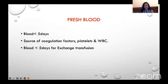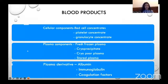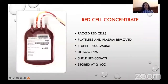Fresh blood is blood that is less than 5 days old. It is a source of coagulation factors, viable platelets, and WBCs. It is used for exchange transfusion.